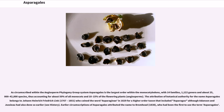As circumscribed within the Angiosperm Phylogeny Group system, Asparagales is the largest order within the monocotyledons, with fourteen families, 1,122 genera and about 25,000 to 42,000 species, thus accounting for about fifty percent of all monocots and ten to fifteen percent of the flowering plants. The attribution of botanical authority for the name Asparagales belongs to Johann Heinrich Friedrich Link (1767–1851), who coined the word in 1829 for a higher order taxon that included asparagus, although Adanson and others had also done so earlier.